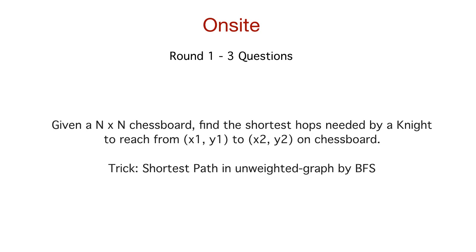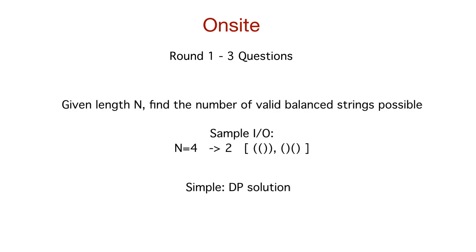The last question in round one: given some length n, find the number of valid balanced strings possible. For example, when n is four, there are two balanced strings possible. Again, this is a fairly easy problem solvable with DP, which I did.